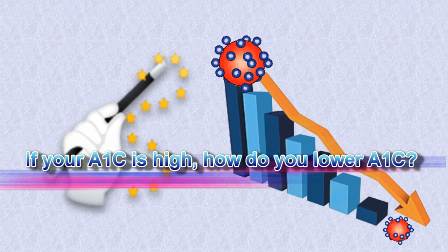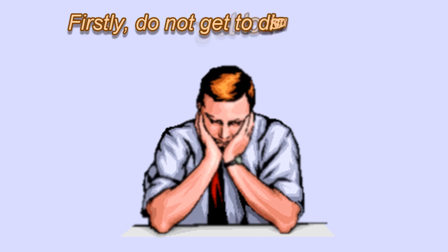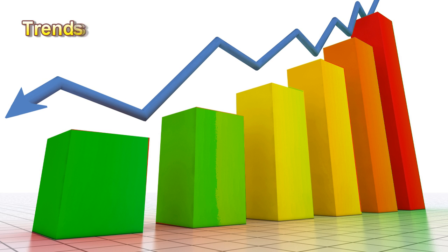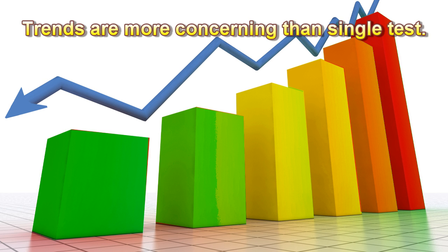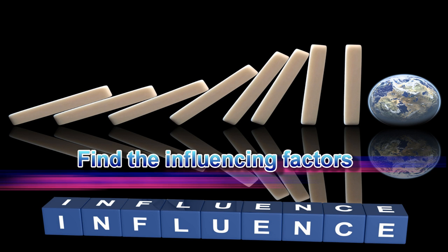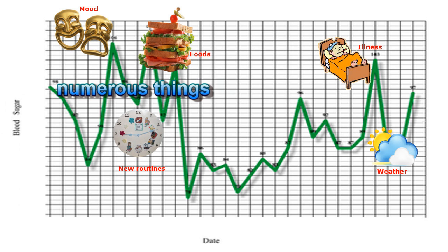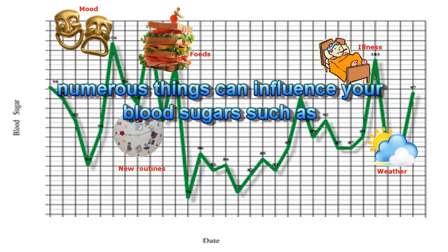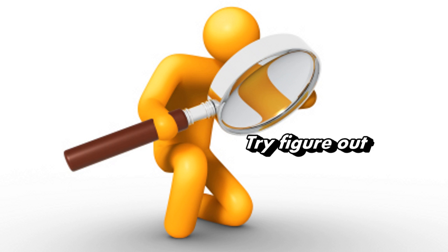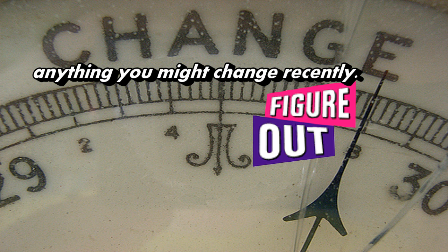If your A1c is high, how do you lower it? First, do not get discouraged over your numbers. Trends are more concerning than a single test. Find the influencing factors. Numerous things can influence your blood sugars such as mood, new routines, foods, illness, and weather. Try to figure out anything you might have changed recently.